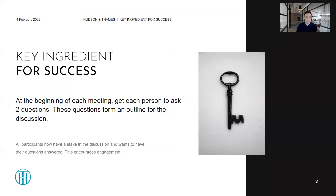Let me mention what is described in Wu's article as the key ingredient for maintaining success in a reading group. She recommends the following: at the beginning of each meeting, get each person to ask two questions. These questions will then form an outline for the discussion as the meeting goes on. The reason for this is that all participants now have a stake in the discussion — they want to see their questions answered, and it also encourages them to take part in discussions of other people's questions. It is a great way to force engagement and keep interest going throughout the year.